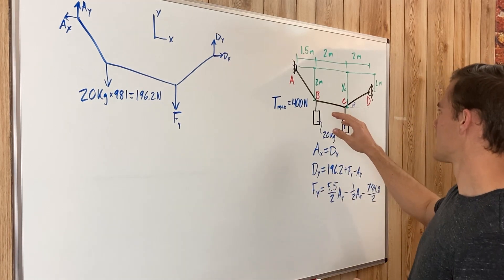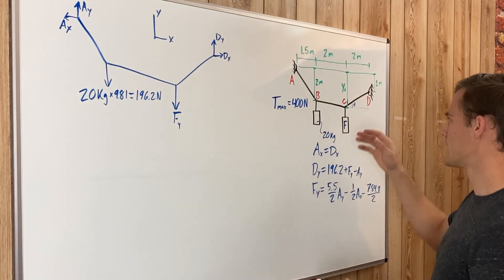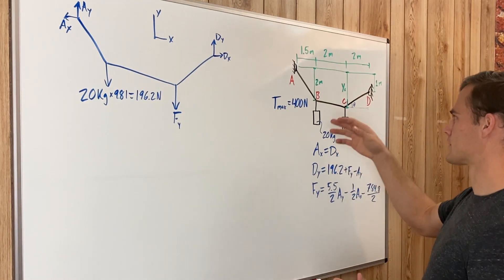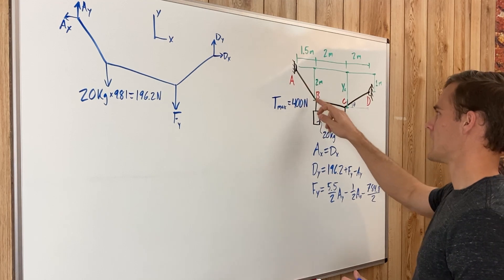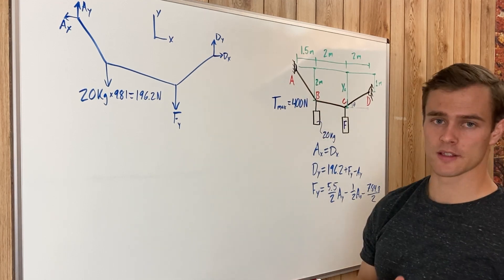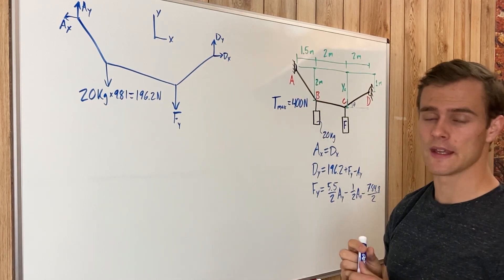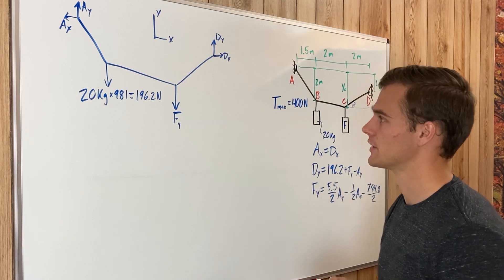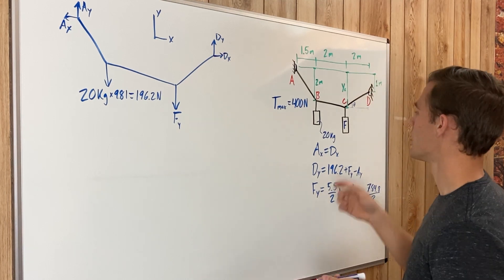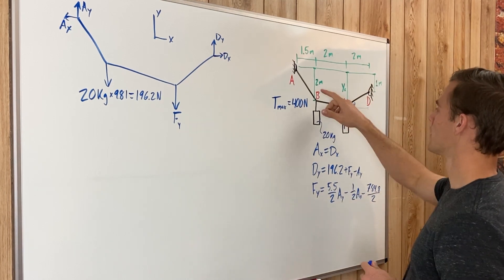Just by looking at the picture, segment A-B is drawn with the greatest slope, so we know it will have the maximum tension. It is also the only segment for which we know the geometry.